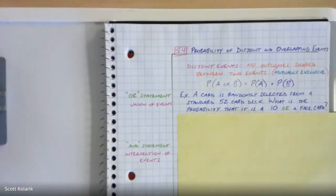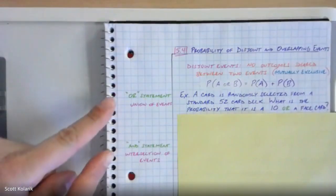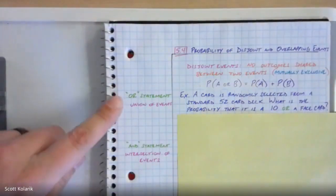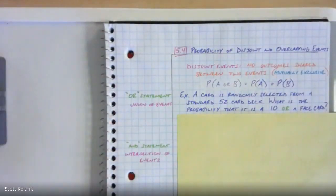Alright, chapter five section four: probability of disjoint and overlapping events. This lesson is basically going to hinge on two phrases — the words 'or' and 'and.' These are very common in everyday language, and when it comes to probability, 'or' and 'and' statements are fundamentally going to change the realms of possibility that we're going to be analyzing.